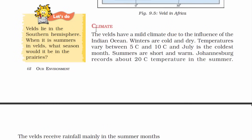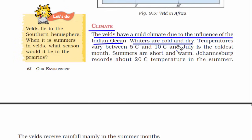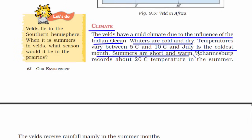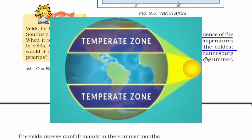Now let's look at the climate of this region. It has a very mild climate because it is next to the Indian Ocean. Winters are cold and dry, just like India, and temperature varies from 5 to 10 degrees Celsius — July is the coldest month. Summers are short and warm, the reason being it's in the temperate zone.